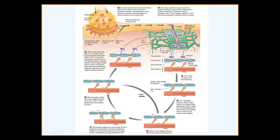Acetylcholine binding to the acetylcholine receptor opens the channel. When you open the channel, sodium comes in first, then potassium goes out. Initially sodium coming in causes a graded potential, which is transmitted across the sarcolemma as an action potential. That action potential wave travels using voltage-gated sodium channels and voltage-gated potassium channels for repolarization — the same events we covered in earlier chapters.